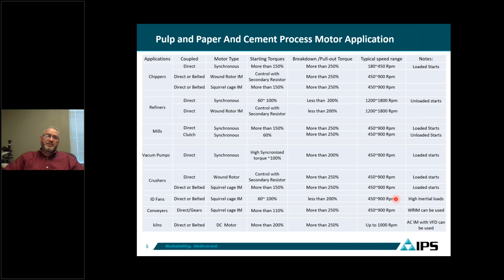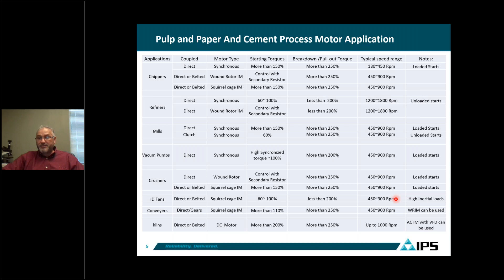Kilns are very special — typically driven by DC motors, direct-connected or belted. They demand more than 200% torque, with overload conditions exceeding 250%. Speed range can be up to 1,000 RPM. These are constant torque applications. If you want to convert a kiln motor from DC to AC, you cannot simply replace it with any 1,000 HP, 1,000 RPM motor. Someone who truly understands the torque demands must be involved, because the motor must be specifically designed for the torques required during operation.